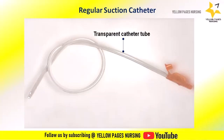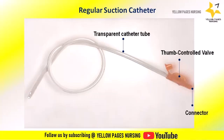For the regular suction catheter: the catheter tube is a long, flexible, and transparent tube. The proximal end is called the connector, which connects to the wall-mounted suction apparatus tubing. A thumb-controlled valve helps regulate suction pressure. The distal end — the catheter tip — is designed to facilitate effective suctioning and typically has one or multiple side holes or eyes to allow removal of secretions or fluids.